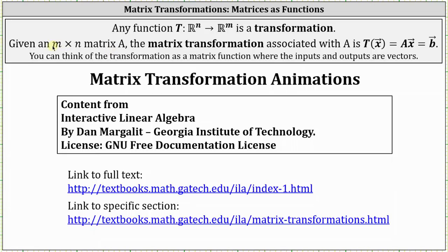For a quick review, given an M by N matrix A, the matrix transformation associated with matrix A is T of vector X equals matrix A times vector X, which is equal to some output vector B. So we can think of the transformation as a matrix function where the inputs and outputs are vectors. And the transformation is from R^n to R^m, where notice N is the number of columns in matrix A, and M is the number of rows.